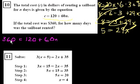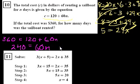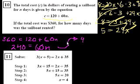If you subtract 120 from both sides of this equation, you get 240 is equal to 60n. And if you divide both sides by 60, 240 divided by 60 is the same thing as 24 divided by 6, so that's 4. And 60n divided by 60 is, of course, n. So the sailboat was rented for 4 days.